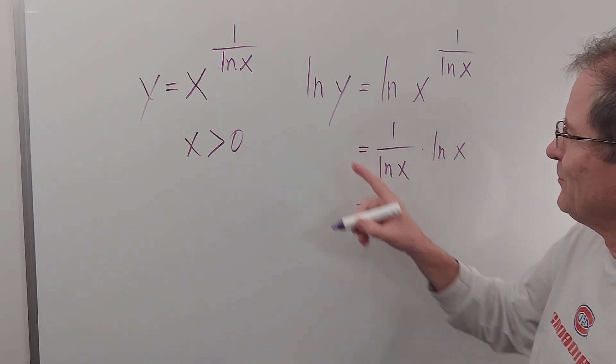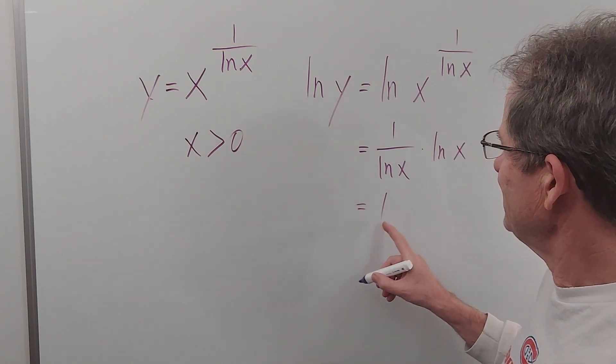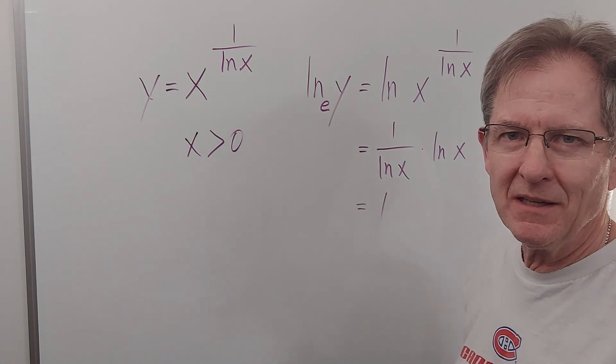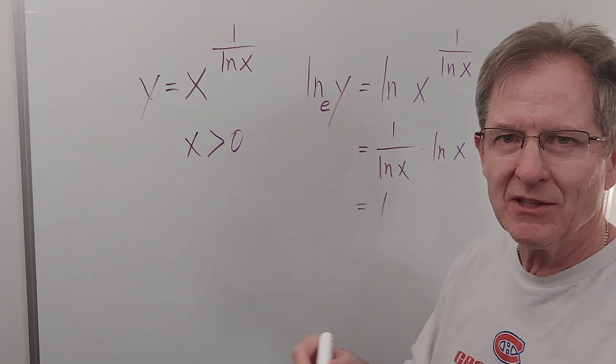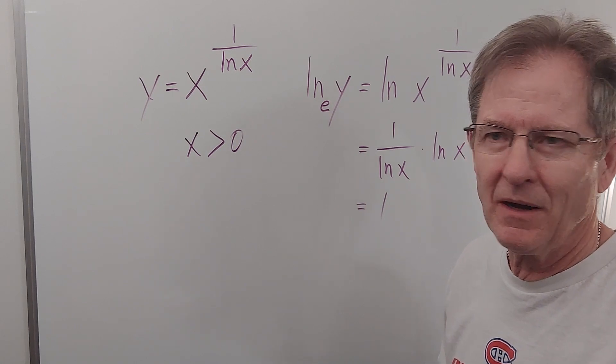So if the ln of y is 1, what's y? Well, this is the exponent to which the base, and of course the base of the natural log is Euler's number, e, 2.718281828, and then just when you think it's going to repeat, it doesn't. It's an irrational number, like pi.